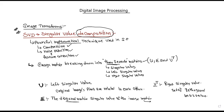V transpose describes how the image features are distributed. The original image will be described as the product U times sigma times V transpose.